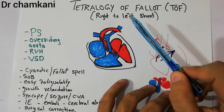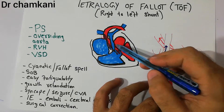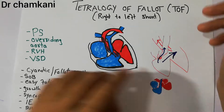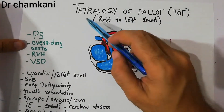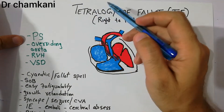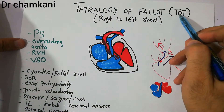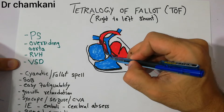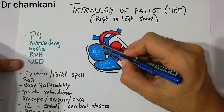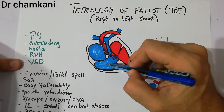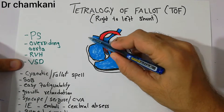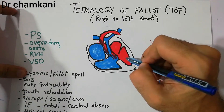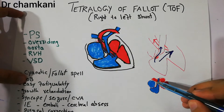In this congenital anomaly there are some problems due to which blood from the right side of the heart is basically shifting into the left side directly. Normally, blood from the body comes into the right atrium, goes into the right ventricle, from the right ventricle into the pulmonary artery, into the lungs, back into the left atrium, then the left ventricle, and is pumped into the aorta and into the body.